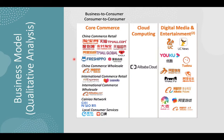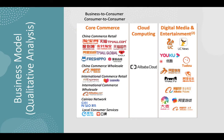Starting with the business model: Alibaba is an e-commerce giant which operates in the business-to-consumer and consumer-to-consumer segments, majorly in China but also with international operations. The biggest Chinese platforms are Taobao and Tmall, and its international commerce retail platforms are AliExpress and Lazada. Beyond core e-commerce, they're also expanding in cloud computing, competing with Amazon, Microsoft, and Google, showing strong revenue growth. They also have a digital media and entertainment segment with platforms like Youku, the Chinese equivalent of YouTube.